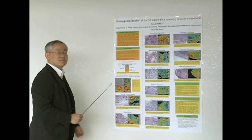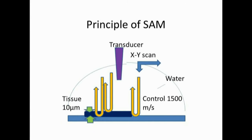This is the principle of this microscope. Ultrasound from the transducer deflects off both the glass slide and section, and returns to the transducer. These waves pass through 10 micrometer sections. The transducer automatically scans the section to calculate the speed of sound through each area.